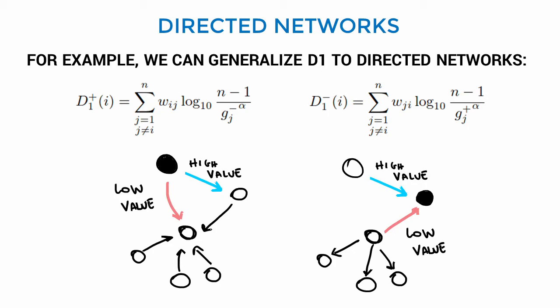The pink arc, on the other hand, adds little value to the out distinctiveness of the black node. This arc reaches a node that has many incoming arcs.